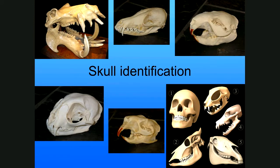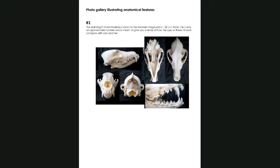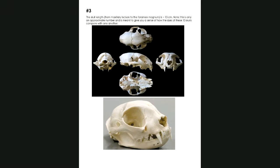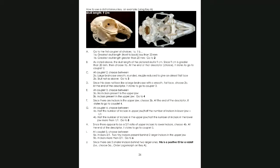The handout gives you pages with anatomical features and tells you a little bit about the size of the animals to give you an idea, and then you've got pictures of the different skulls. You should be able to go through the identification. On the very last page of the handout he actually has the keys and also a sample of how to do identification with a dichotomous key.